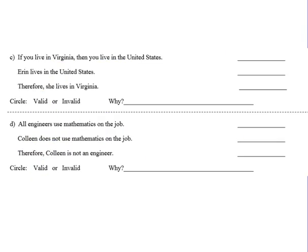Moving on. If you live in Virginia, then you live in the United States. P. Q. Remember. First step. Always P, Q. Second step. Erin lives in the United States. So I'm telling you that Erin lives in the United States. That's Q. Living in the United States is Q. Therefore, can we conclude that she lives in Virginia? Living in Virginia is P.